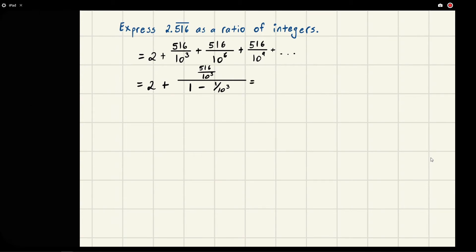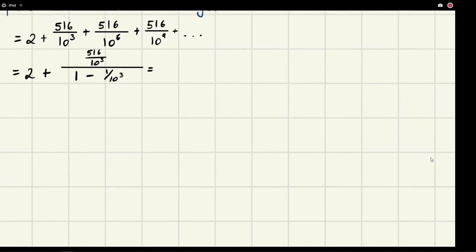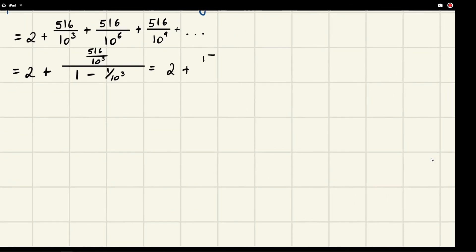When you do this, you should get 2 plus 172 over 333. If you were to turn this into the decimal part, you would see that it's repeating: 516, 516, 516. So we've done it.